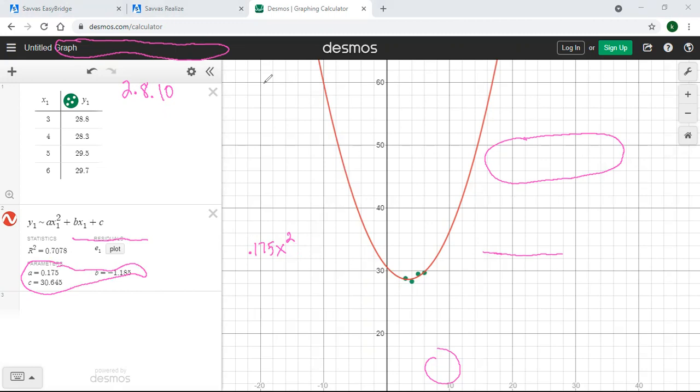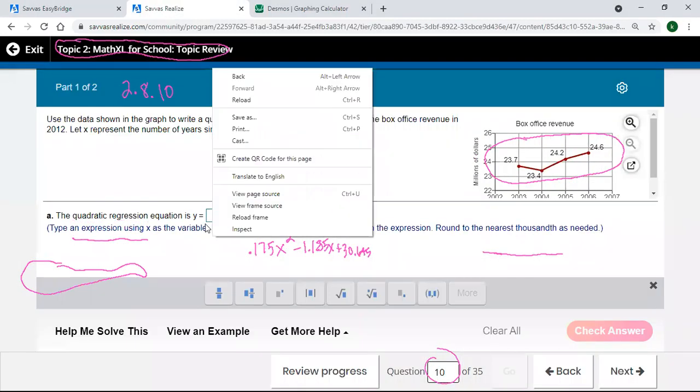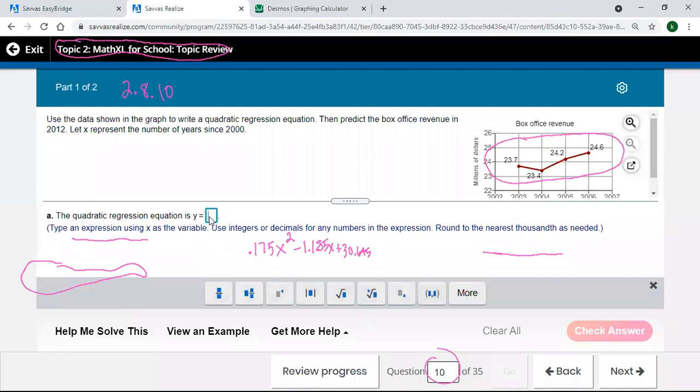It's a 0.175 for the a, that's the coefficient on the x-squared, plus my b, or minus in this case because it was a negative, so minus 1.185 x, and my c plus 30.645. And I hope I don't have to round those because I only have three decimal places there.